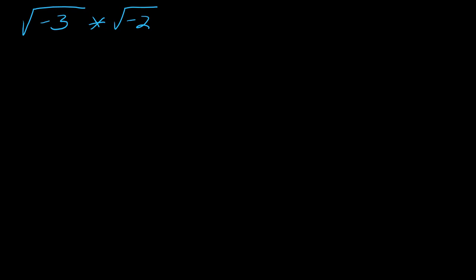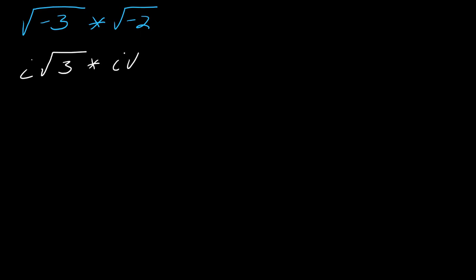Now let's talk about how you would evaluate radicals that have negatives in them — this actually works a little counterintuitively. You don't just multiply the numbers together. You need to make sure your answer captures the fact that these are both negative. The way you do that is you first pull the i's out. So now I have i times i, which is i squared, and then square root of 3 times square root of 2, which gives the square root of 6. So now we have to think about what i squared is.